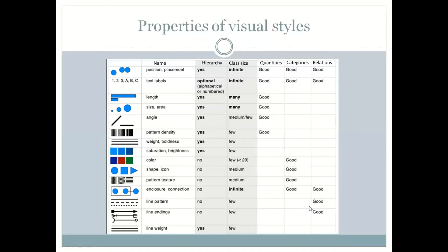In contrast, for quantities, angles work fine, size works fine. This is basically what we use in maps where we're trying to show which area is doing well and which area is not.